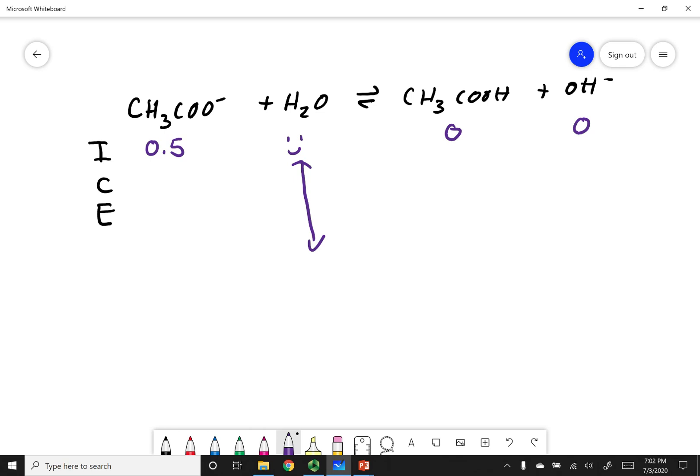So both of these are 0 in concentration. Since I have 0s on my product side, plus, plus, and minus, everything is in a 1 to 1 ratio. So X is across the board. 0.5 minus X, X, and X. Now take a look at this.